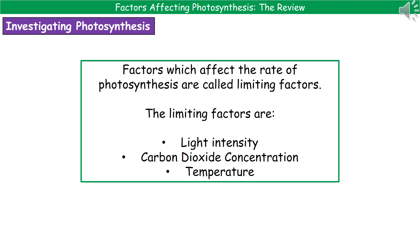Welcome to our review on the factors affecting photosynthesis. The first thing we need to know about is the term 'limiting factor.' Whenever we're talking about a limiting factor, we're referring to something that is going to affect the rate of photosynthesis and basically not let it go any faster. We have three limiting factors for photosynthesis: light intensity, the concentration of carbon dioxide, and temperature.